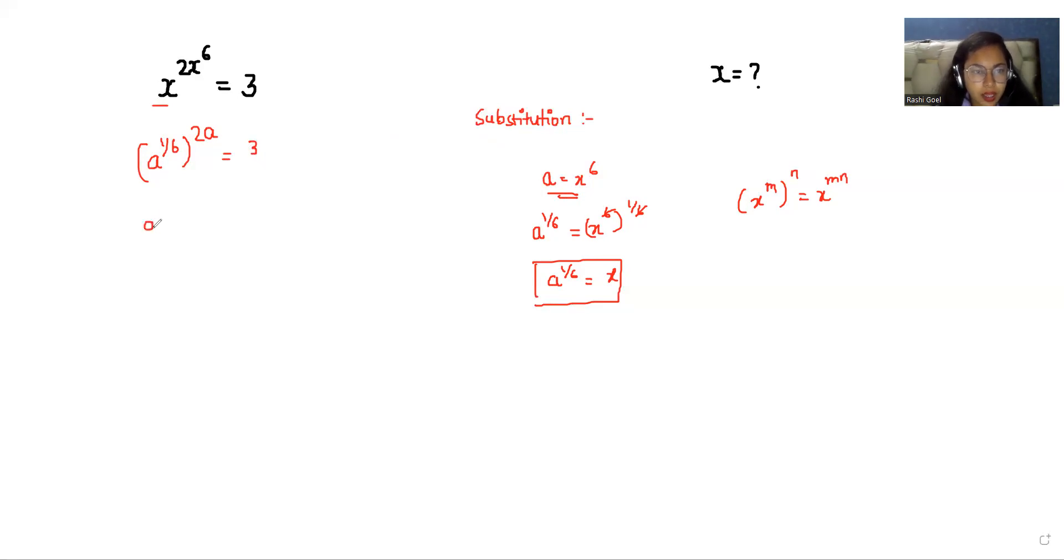Now A^(1/6) multiplied by 2A equals 3. So we simplify to A^(1/3) times A equals 3. Now we have property that x^m power n equals x^n power m. So I can write it as A^A whole power 1/3 equals 3.